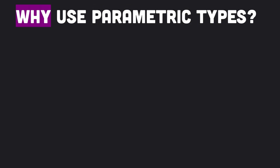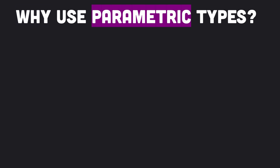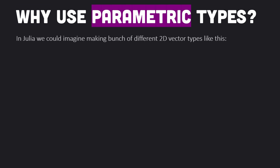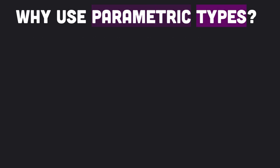To explain the point of parametric types, it helps to work through a simple example. Here we are defining a parametrized vector type. We could use Float64 instead of the type T, however T is a placeholder for an actual type — no concrete type named T exists. T is what we call a type parameter. Just like functions have parameters, parametric types have type parameters. In Julia, we could imagine making a bunch of different 2D vector types — defining a struct for integer Vector2D, for float Vector2D, and defining the norm for each. This would be cumbersome and require a lot of boilerplate repetitive code.